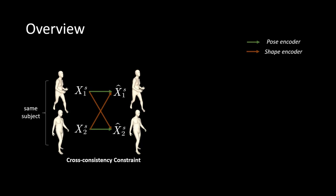Our method is based on two key ideas. First, shape code should not change within a motion sequence, which we enforce with cross-consistency constraint.